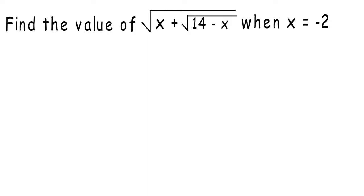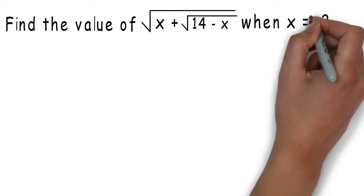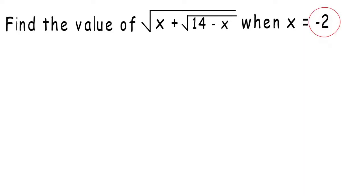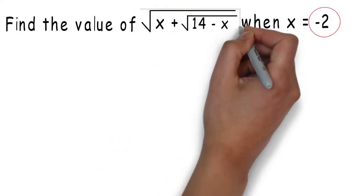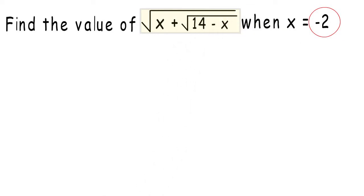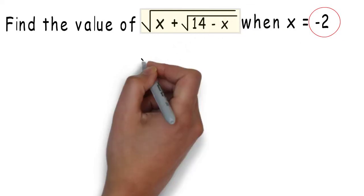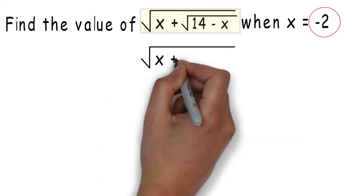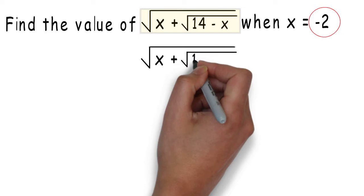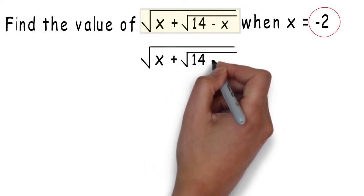In this problem, we are just going to substitute negative 2 for x in the given radical expression. Our expression is the square root of x plus the square root of 14 minus x.